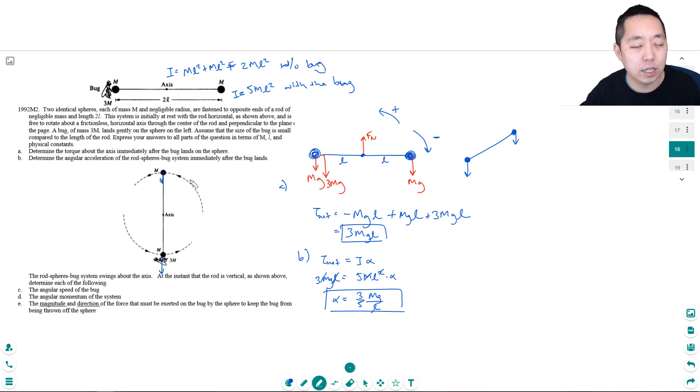Because it's not a constant torque, I can't use kinematics. For an algebra-based physics class, which is AP Physics 1, you only know to use kinematics under constant acceleration or constant angular acceleration, but the angular acceleration is not constant here. So we have to use conservation of energy.